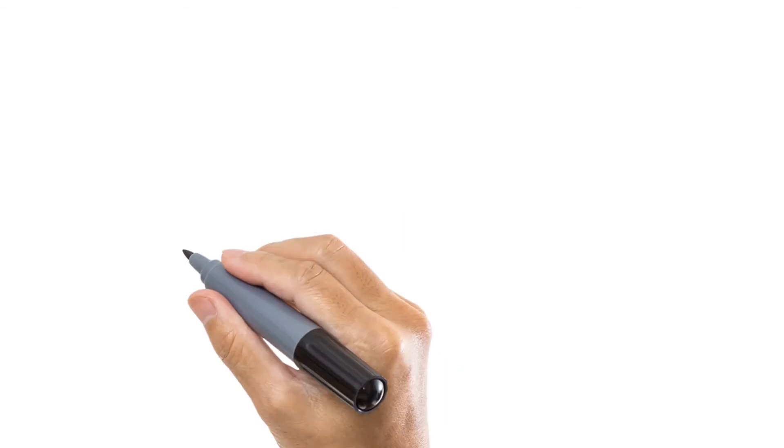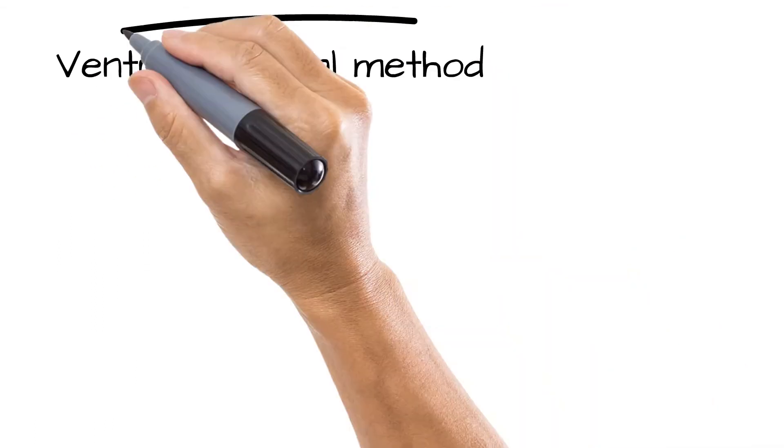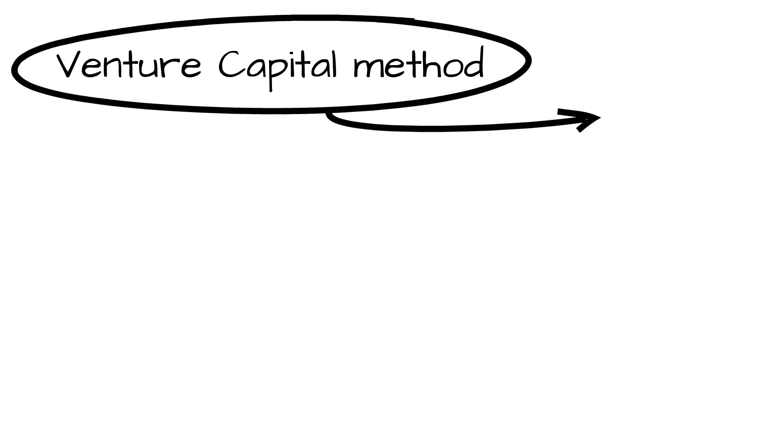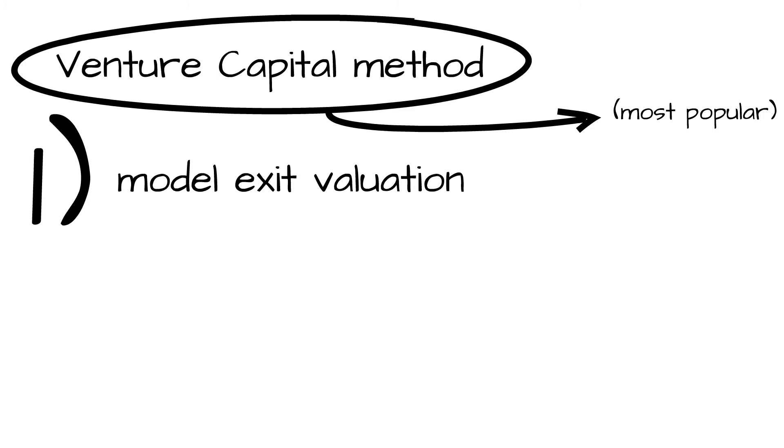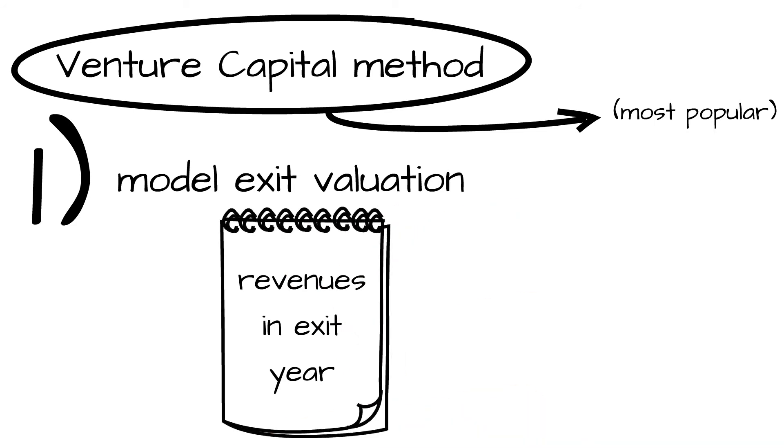One way we look at it is called the venture capital method. It's one of the most popular methods for early stage valuation. It starts by modeling the exit valuation, so we'll look at what the revenues are going to be for the company in year five if that's the exit model. Then we'll say what are the comps, what are other transactions happening, what's the likelihood of this company having a 5x or 7x multiple of revenues when the time comes.